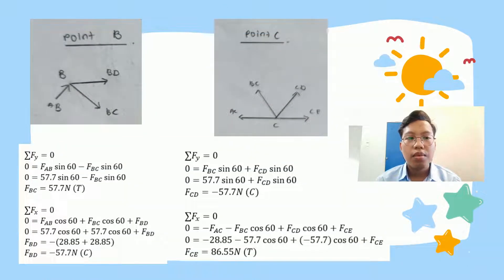Next is point B. From point B, we can get forces AB, BC and BD. We sum for FY. Forces Y involved are force AB and force BC. Force AB we already got as negative 57.7 N. We can find force BC. Sum of FY equals zero. Zero equals force AB sin 60 minus force BC sin 60. Why is it sine? Because we want Y. Zero equals negative 57.7 sin 60 minus force BC sin 60. So force BC equals 57.7 N tension.